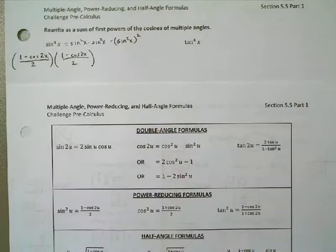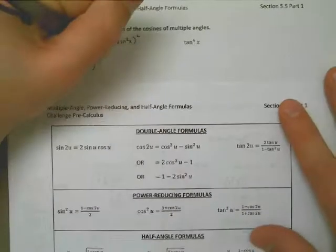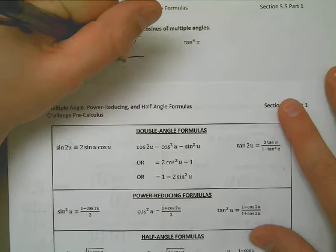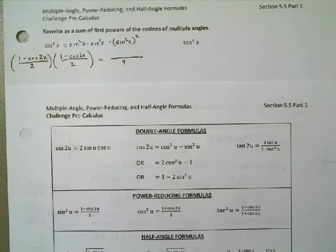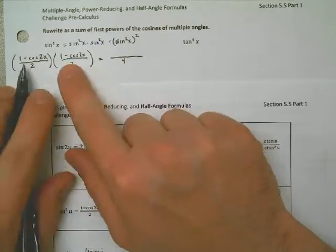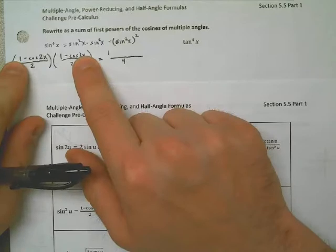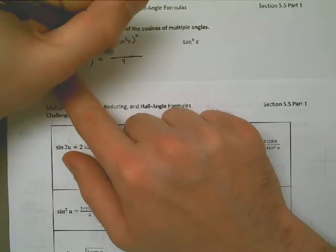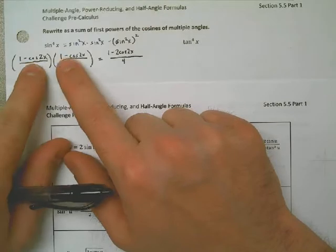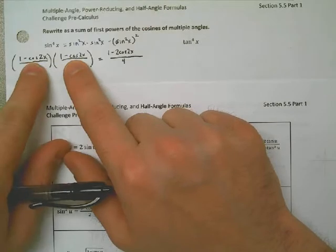Now, what that ends up giving me is on the bottom of a fraction, I have 4. And on the top, I have a FOIL problem. 2 times 2 is 4 on the bottom, but on the top it's FOIL. So I have to go 1 times 1 is 1, minus cosine of 2x minus another cosine of 2x. That would be minus 2 cosines of 2x. And then I have plus cosine squared of 2x.